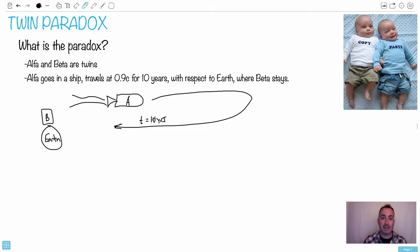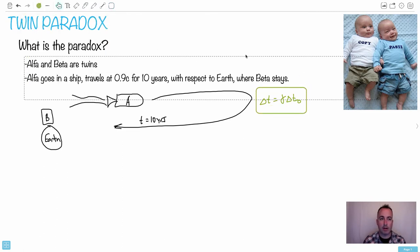Remember, though, this 10 years is the time that Beta records. So we need to look at how much time does Alpha record. You might recognize this example. I've actually done this before in another video. We're going to redo it really quickly just to go over the physics. We're going to need to look at a relativistic time dilation equation. So remember, it's Delta T equals Gamma Delta T0. This is the equation we're going to use, where Delta T0 is the proper time.